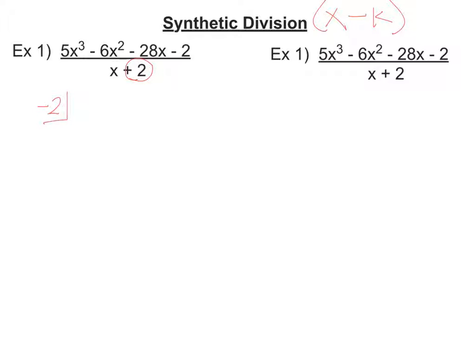I put it in a box. Some people write it a little bit differently. It's all the same thing, so whatever works best for you, that's fine. I like to put it in a box, so whatever is next to the x is always opposite. Then you write your coefficients of the polynomial you're dividing into. So here I have a 5, a negative 6, a negative 28, and a negative 2.